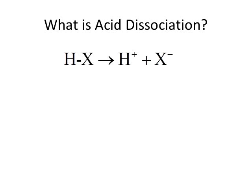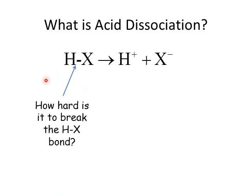There are two factors to think about. First, you've got to break the H-X bond. So the strength of the H-X bond will play a role in determining how strong an acid is. The easier it is to break the bond, the stronger the acid is.